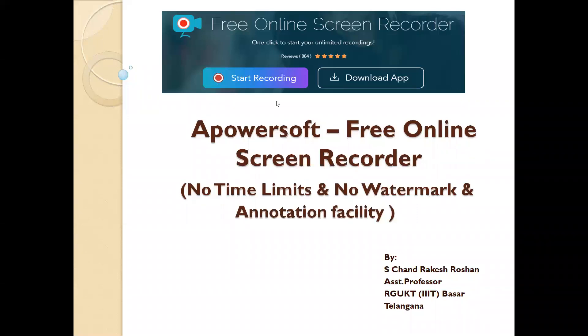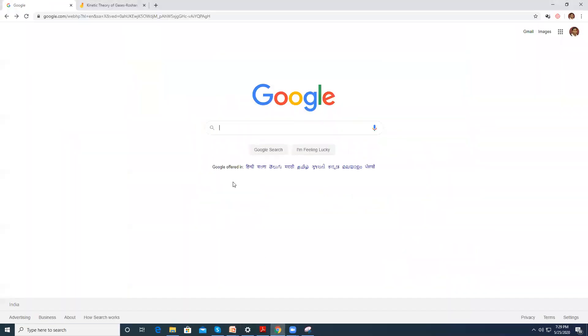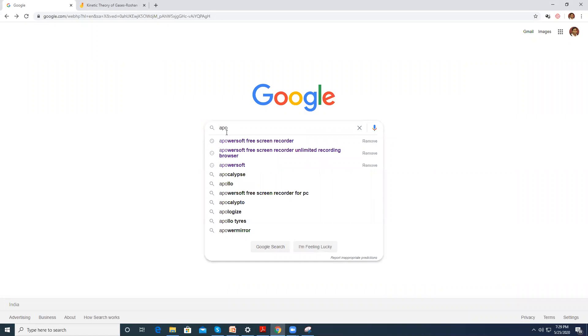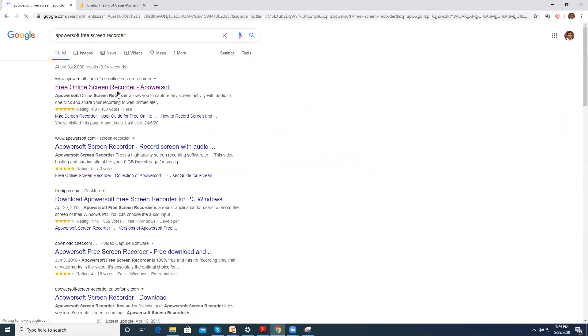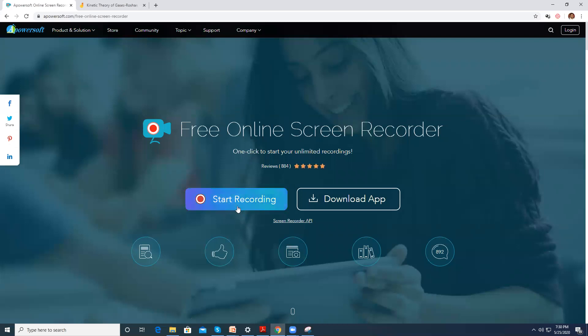So for this, let me just now go to Chrome. And then let me say Apowersoft free screen recorder. And you can click on this. It will take you to the homepage. Now you can see a couple of things: start recording and download app. Now there are two things here. One is this is a browser-based recorder that I am explaining right now. You can also download the app.